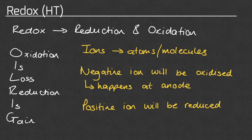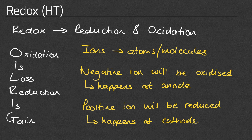In order to turn positive ions back into an atom they need to gain electrons. They have a positive charge because they've already lost electrons, so to get rid of that positive charge we add electrons — which have a negative charge — back to them. Because the positive ions need to gain electrons, they will be reduced, since reduction is the gain of electrons. Since opposites attract, the positive ions move to the negative electrode, so reduction happens at the cathode.